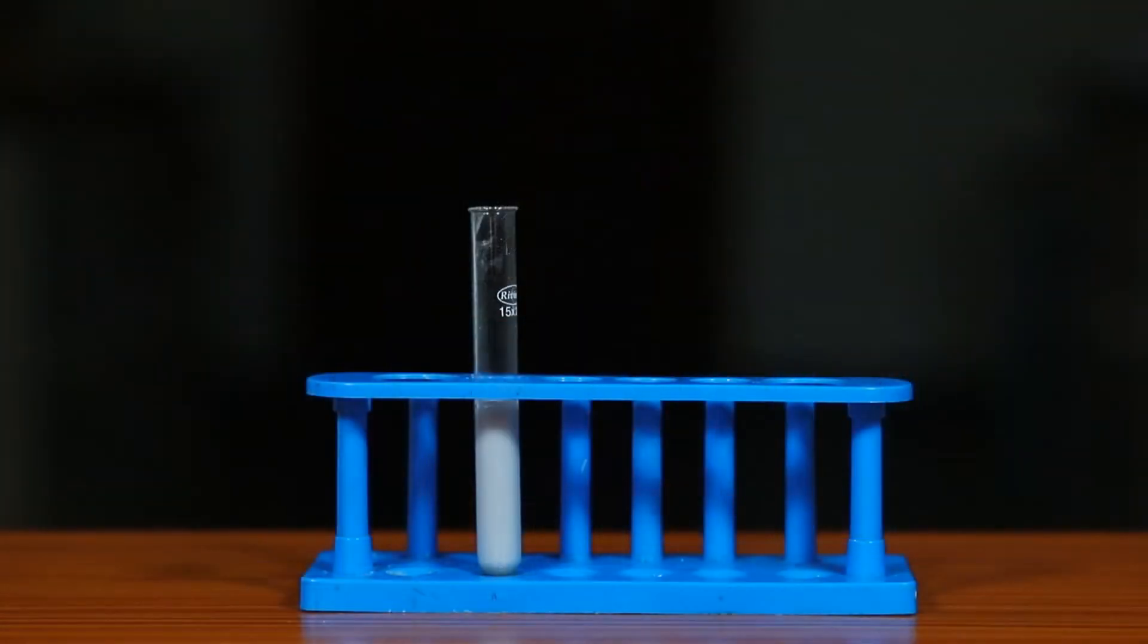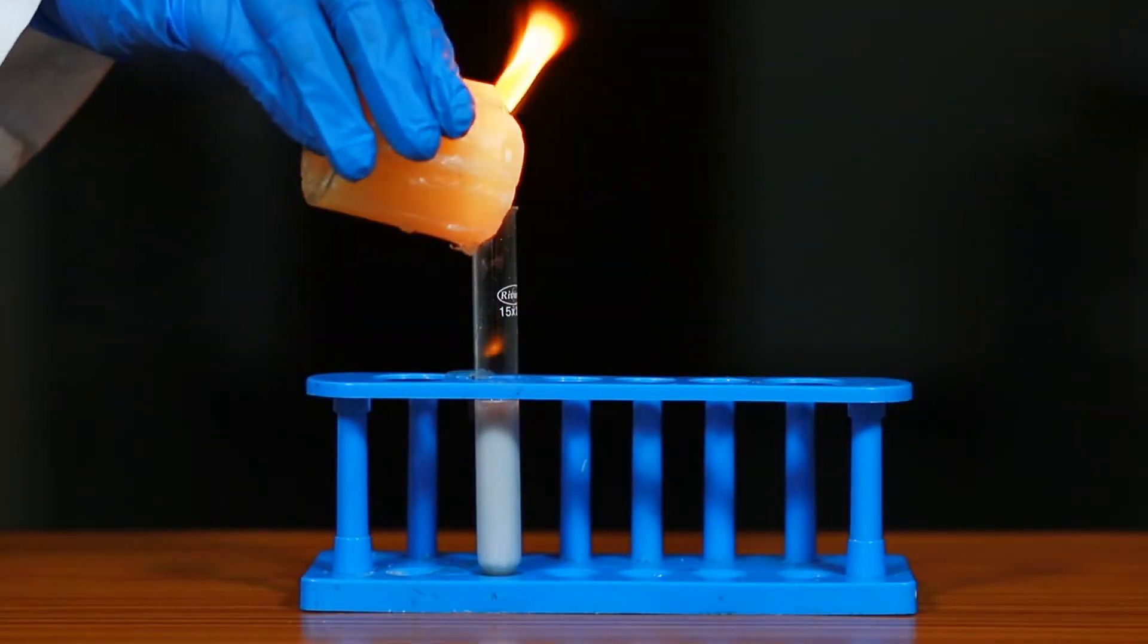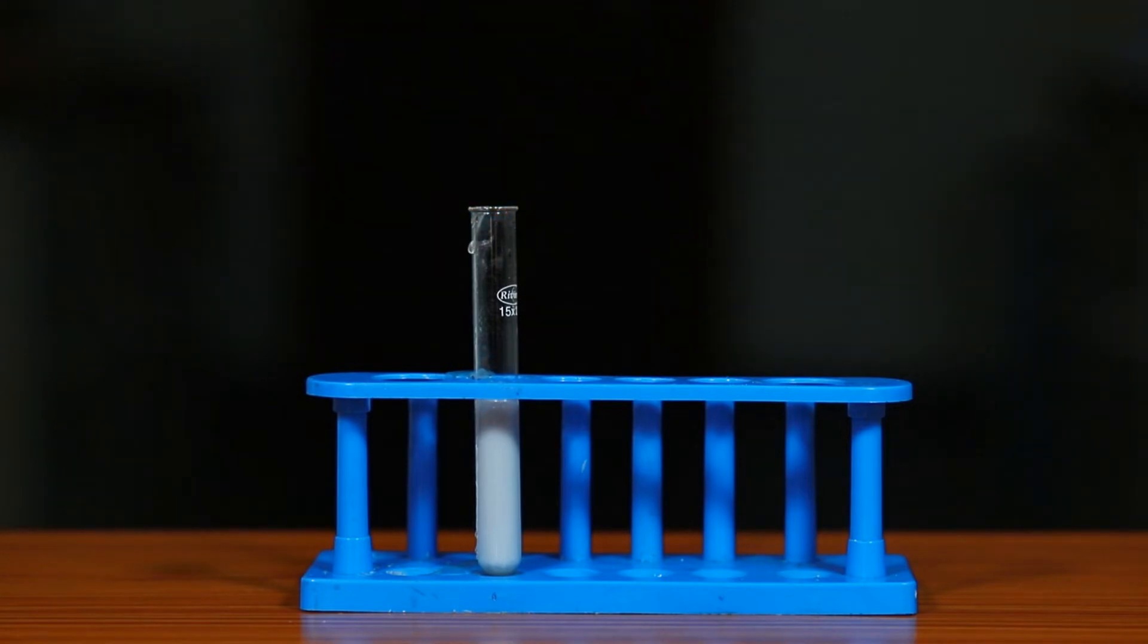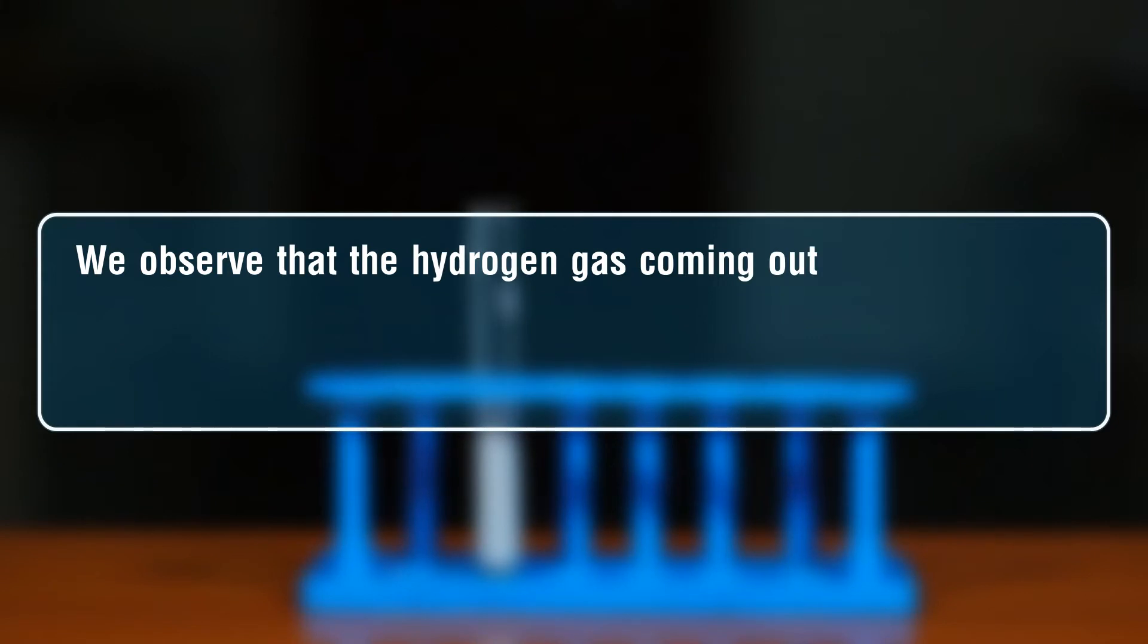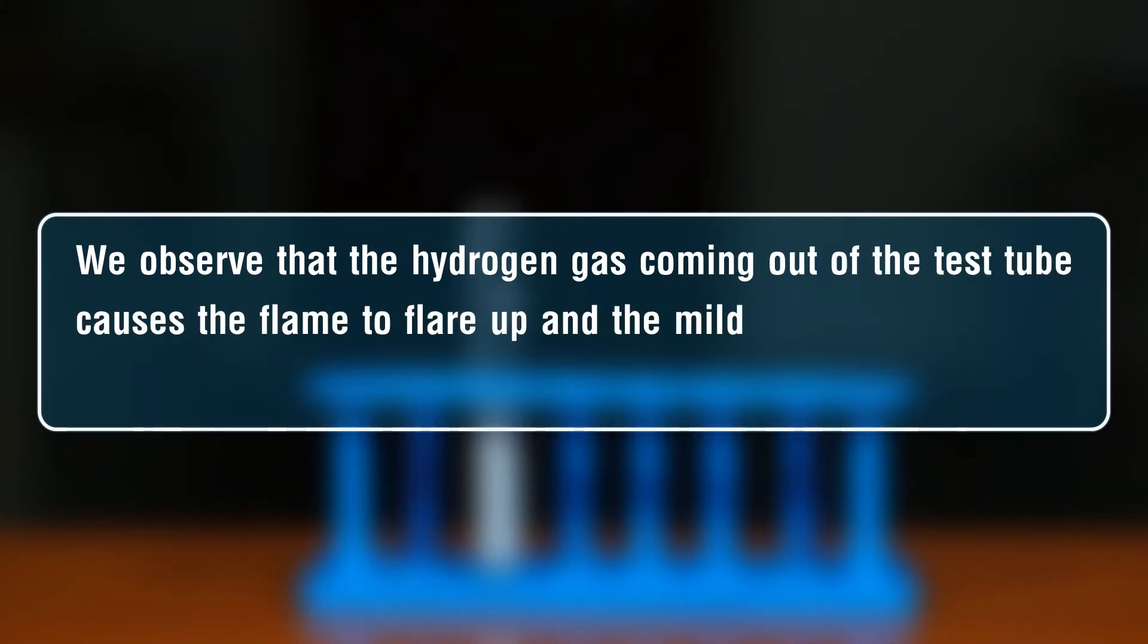Bring the lighted candle to the mouth of the test tube when the colorless gas is liberating. We observe that the hydrogen gas coming out of the test tube causes the flame to flare up with a mild explosion and popping sound, and the flame goes out.